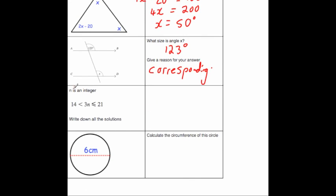Next question. We know that n is an integer, and we know that 3n is bigger than 14, but it's less than or equal to 21. If we divide it through by 3 here, we're going to get 4 and 2 thirds is smaller than n, which is smaller than or equal to 7. And we want all the integer solutions.